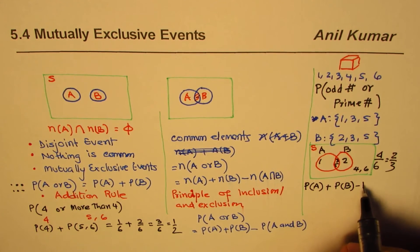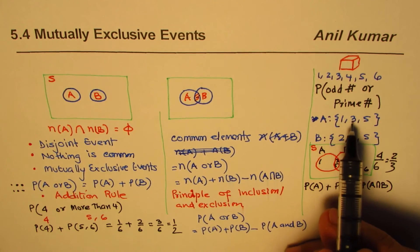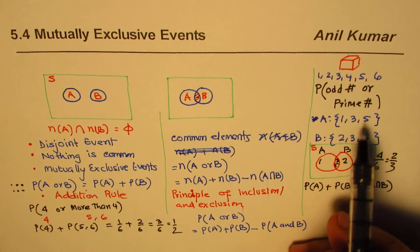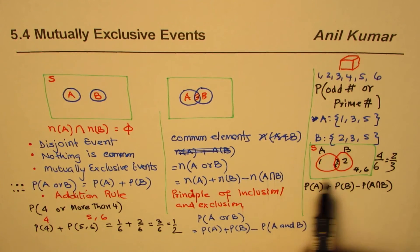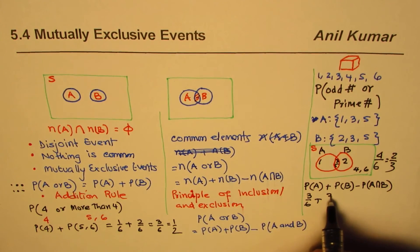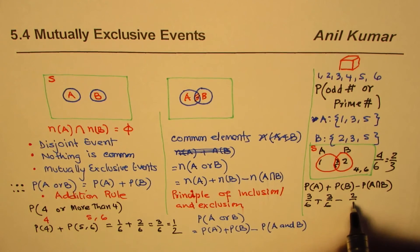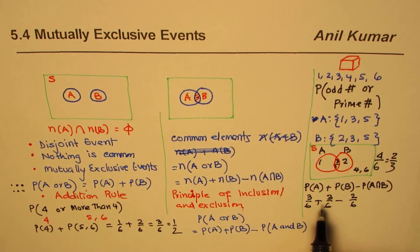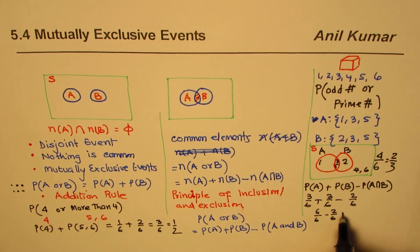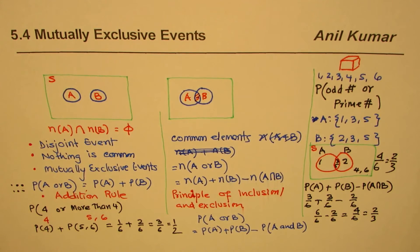Applying the formula: probability of A plus probability of B minus probability of A intersection B. A has three elements out of six: 3/6. B also has three elements out of six: 3/6. The intersection has two elements (3 and 5): 2/6. So: 3/6 + 3/6 − 2/6 = 4/6 = 2/3, which matches our earlier answer.